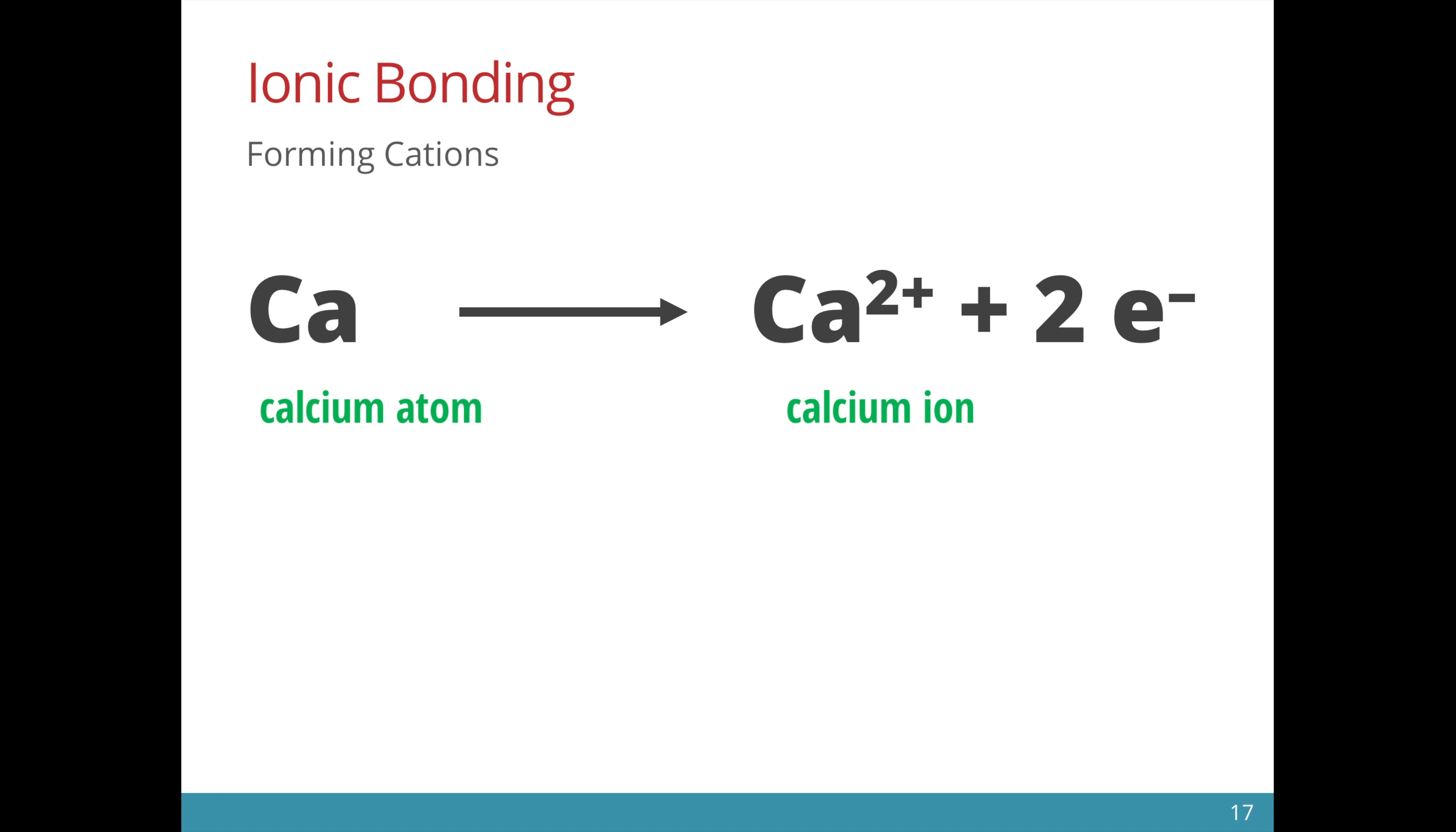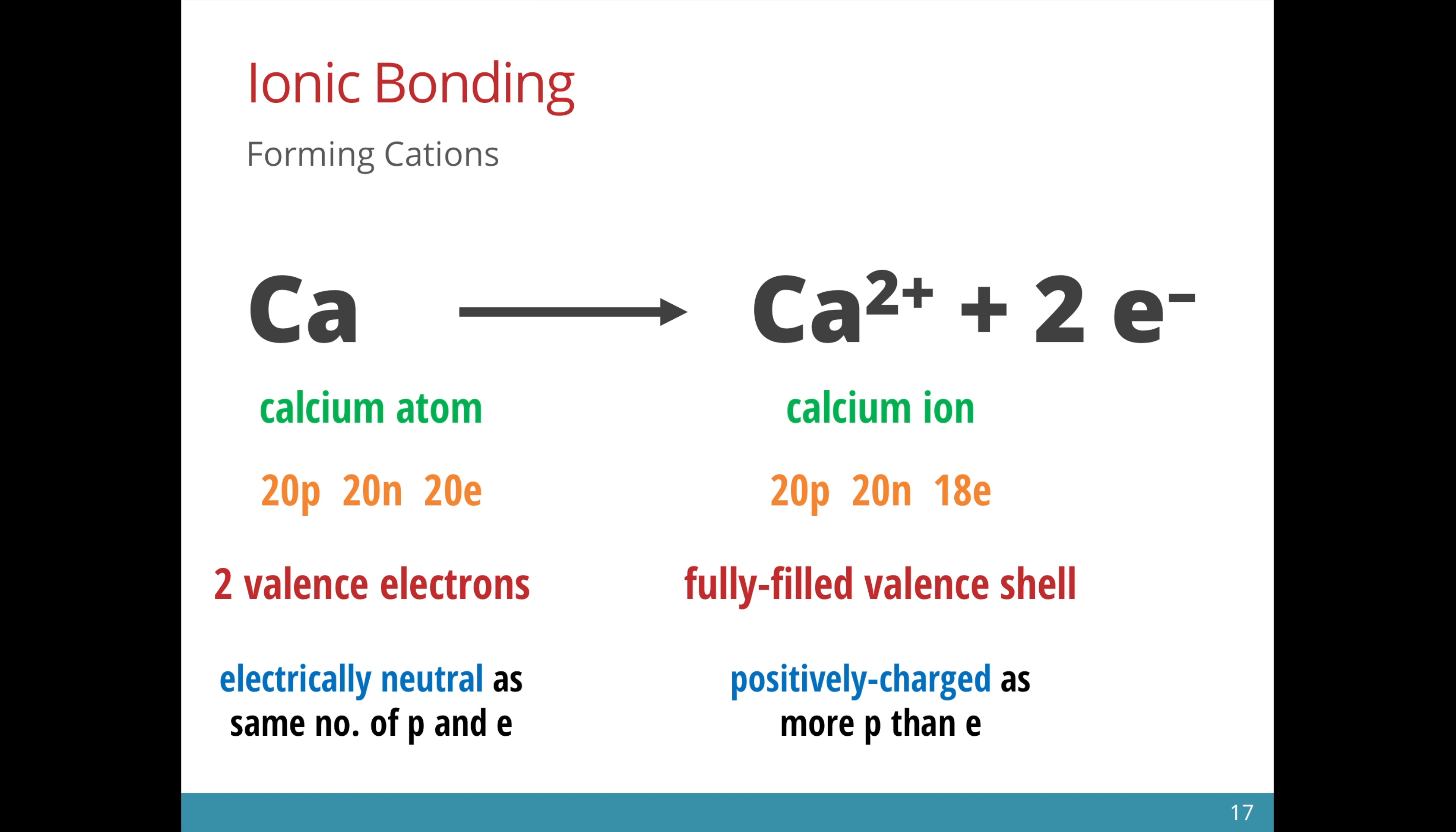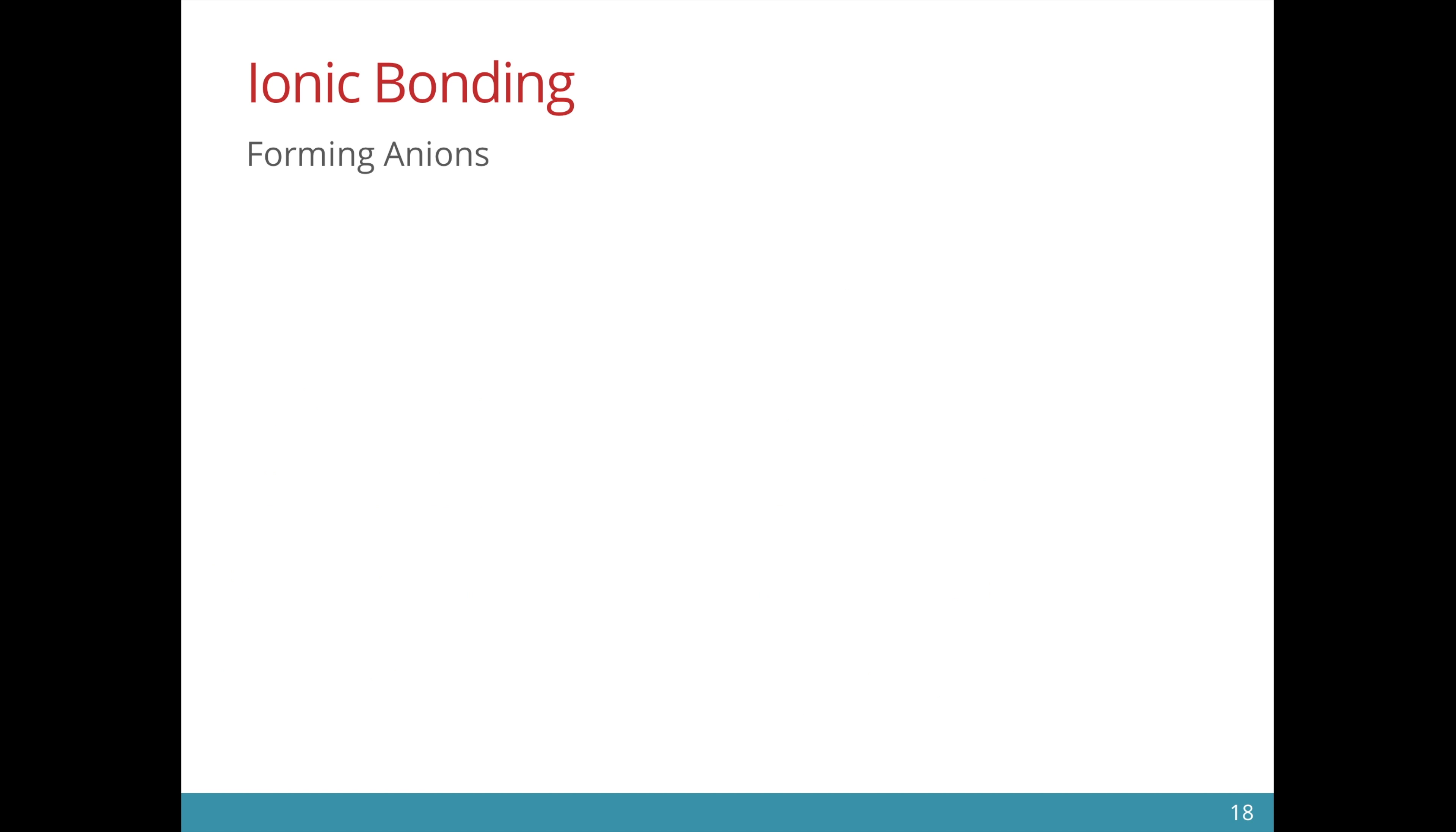Again, let us compare the calcium atom and the calcium ion. So far, we have seen that 2 metals, sodium and calcium, lose electrons to form cations.